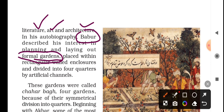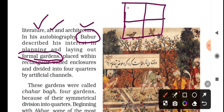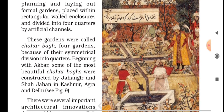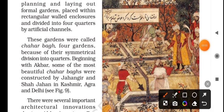A typical Mughal garden design would divide the area into rectangles or squares — divided into quarters. There would be gardens in each section with water channels running between them. This picture is actually a painting, and it apparently shows Babar inspecting his workers as they build a garden.